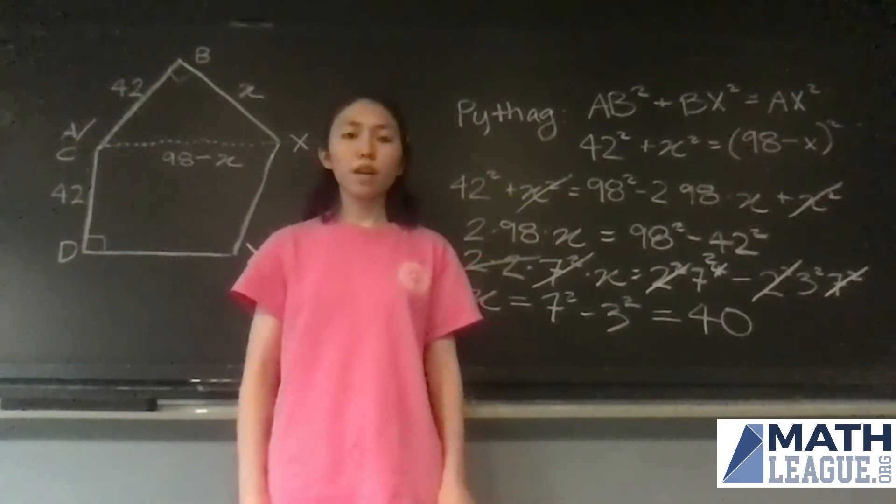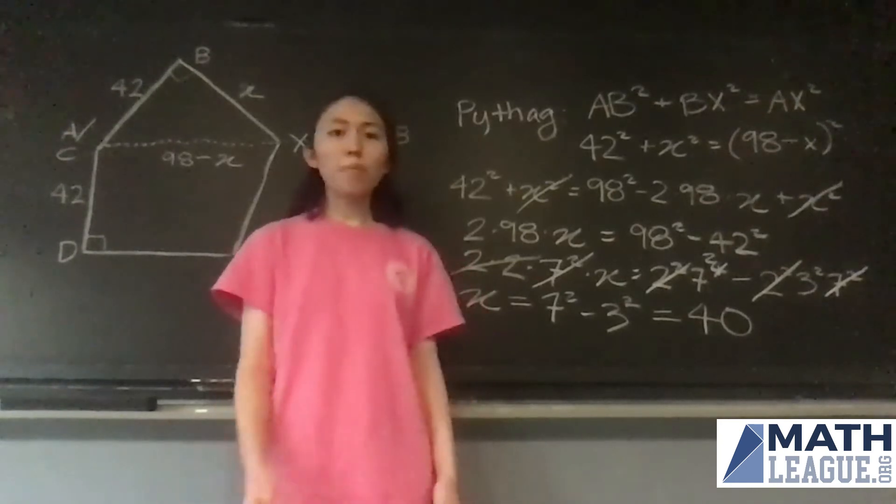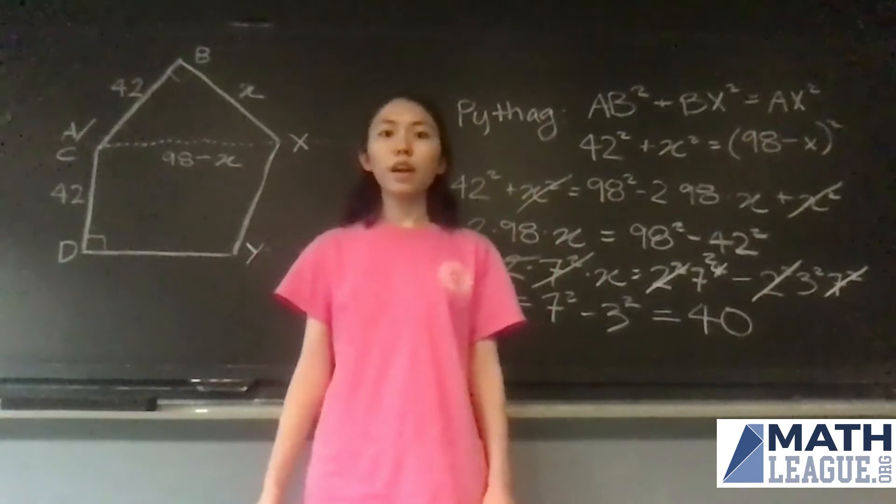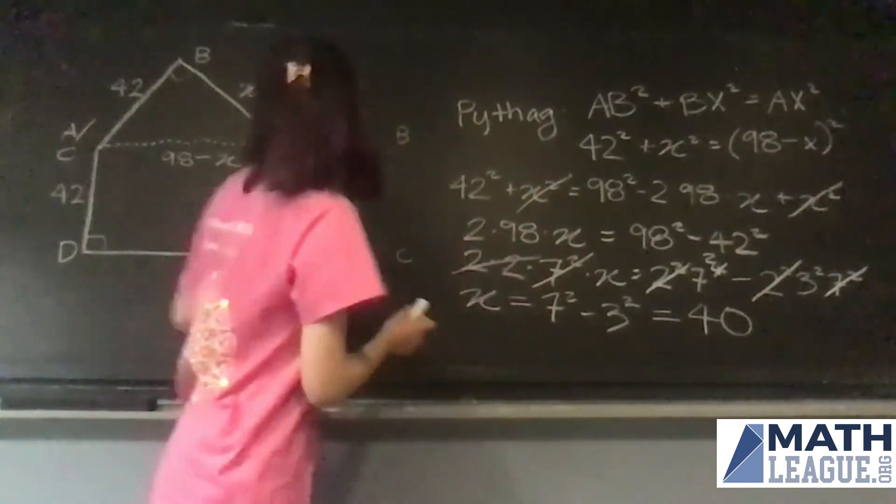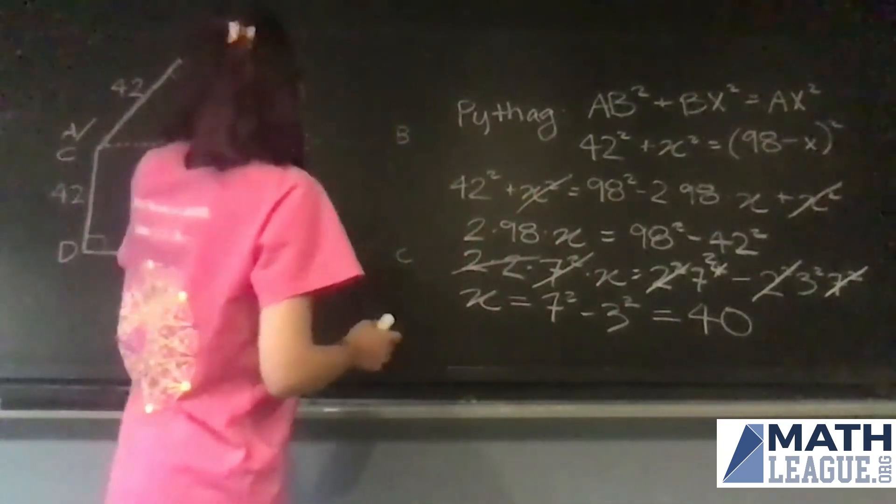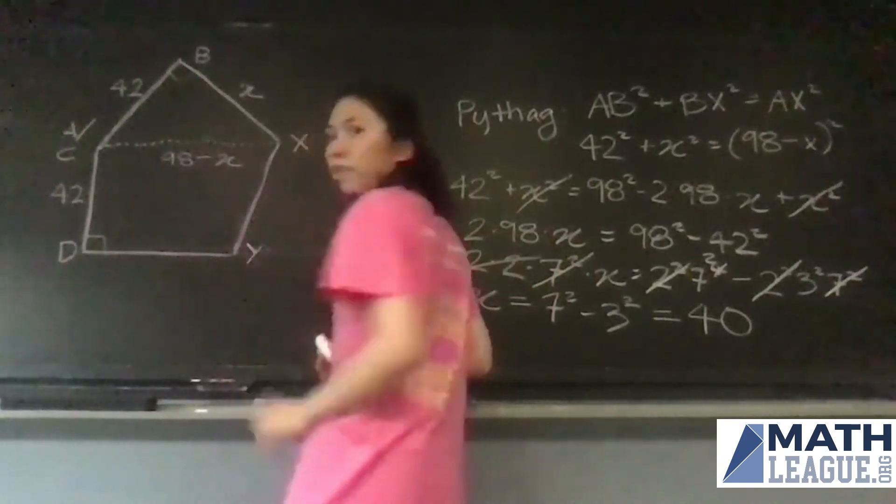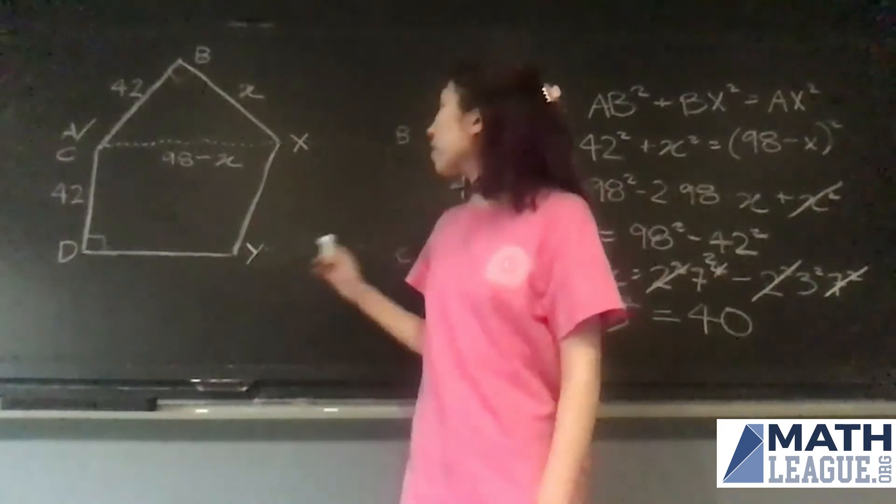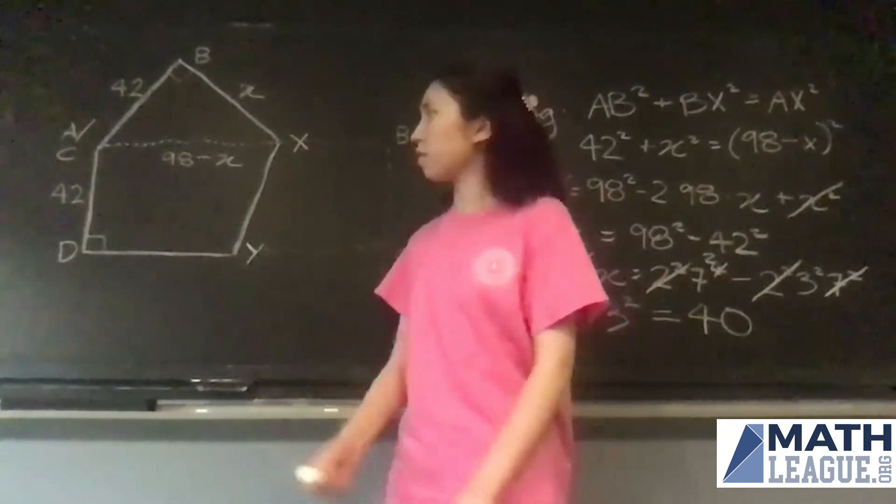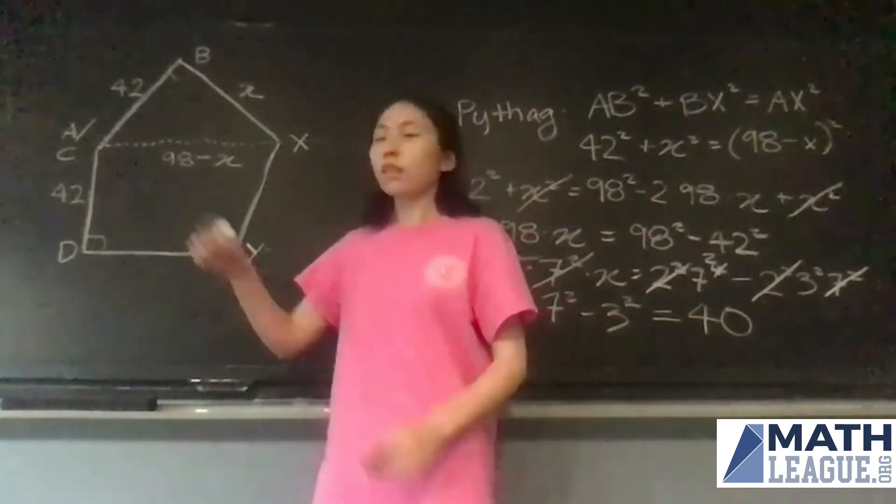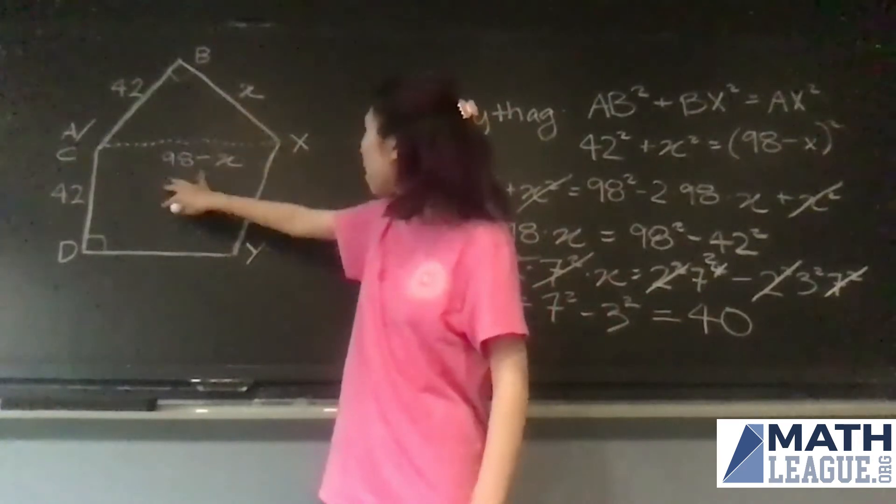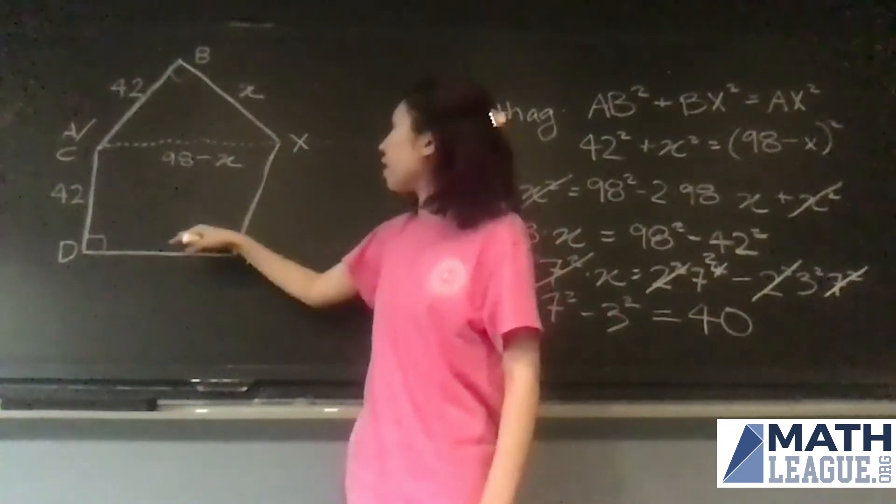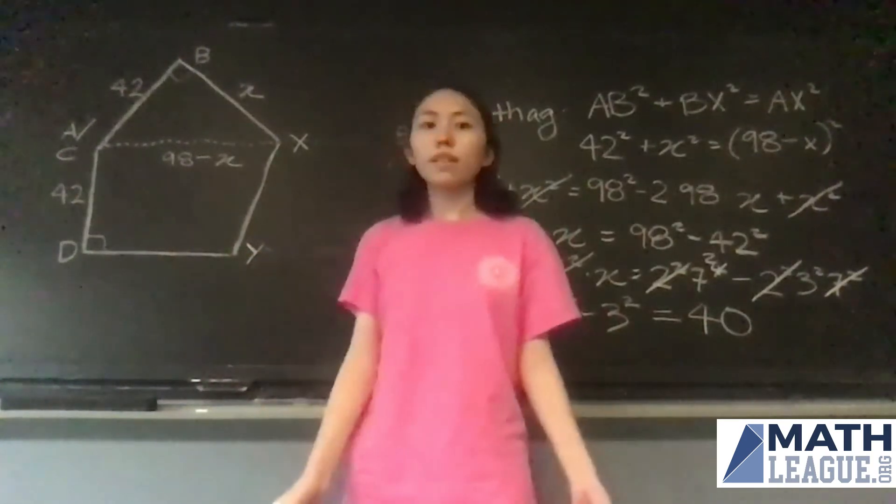Now remember that we can't stop here because we have to remember what the question is asking for, and the question was asking for the area of the pentagon. So we've got multiple parts to this pentagon: this triangle up here, and then this part down here. So how can we find the area?